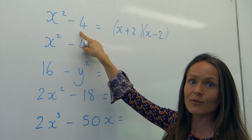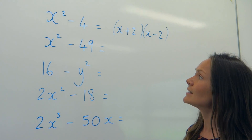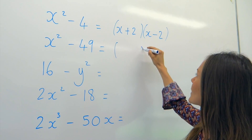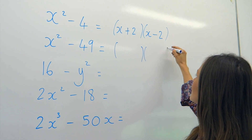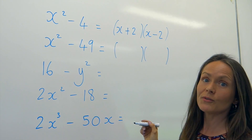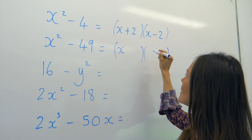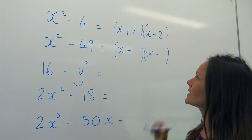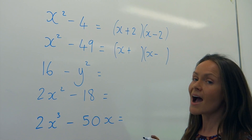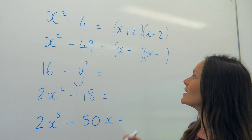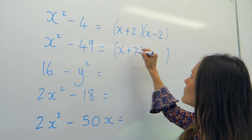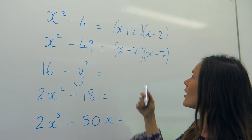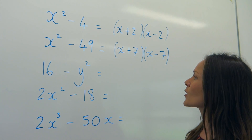For the next example I fill in my double brackets with x values, put in one positive and one negative sign, and the square root of 49 is 7 because 7 squared is 49. So the answer is (x + 7)(x − 7).